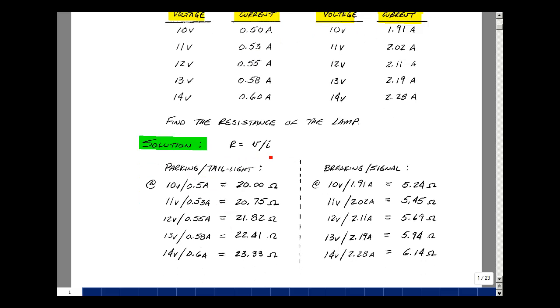If we take the ratio of voltage to current, we get the resistance at that point. For the data I have here: 20 ohms, 20.75, 21.82, 22.41, and 23.33 ohms.